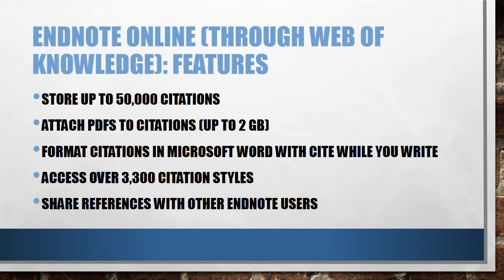With the USC subscription, you can store up to 50,000 citations, attach PDFs to citations, and have up to 2GB of storage space. You can format your citations in Microsoft Word with a plugin called Cite While You Write, which permits you to access over 3,300 different citation styles. EndNote Online also lets you share references with other EndNote Online users, whether at USC or at another institution.